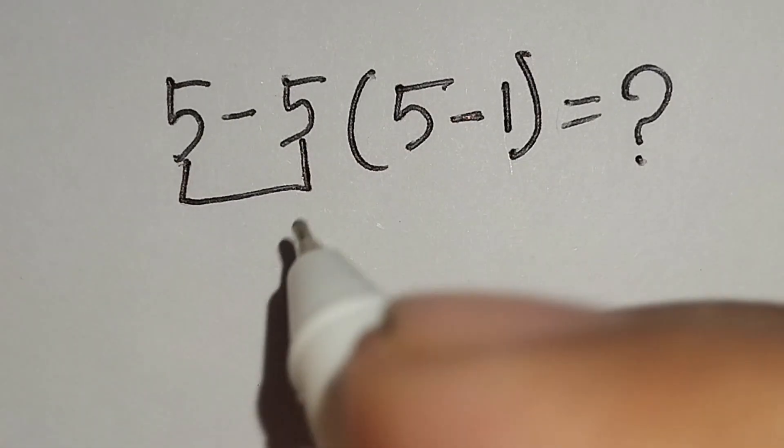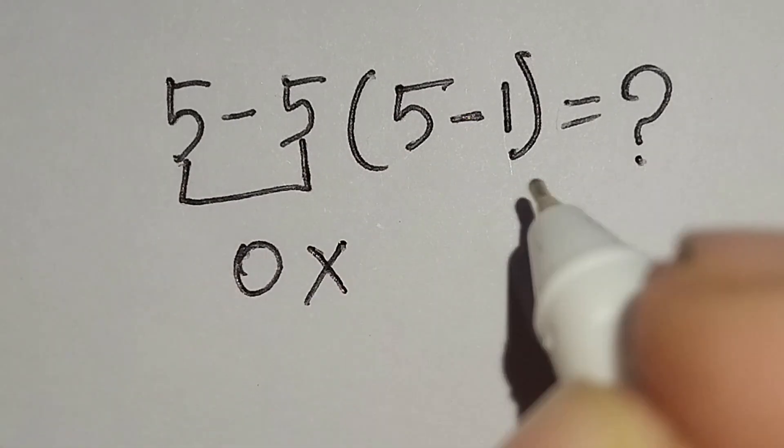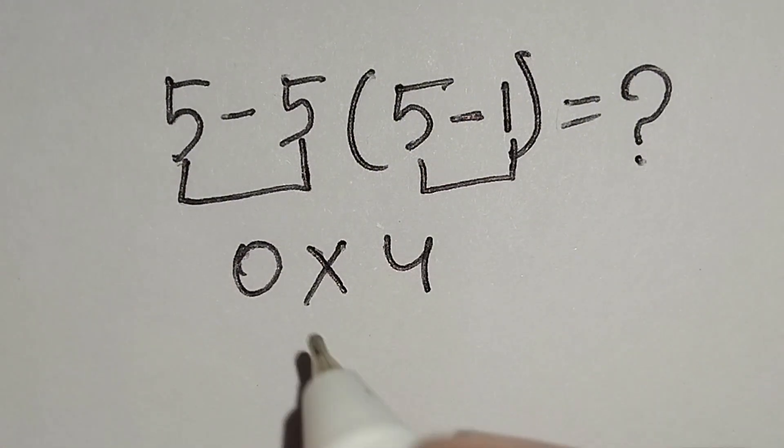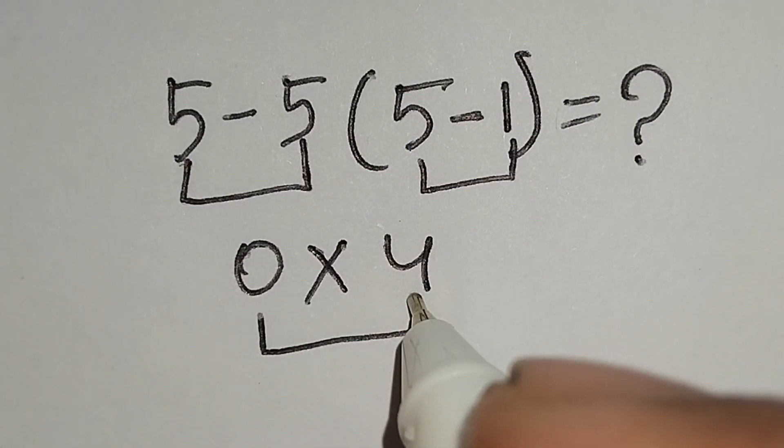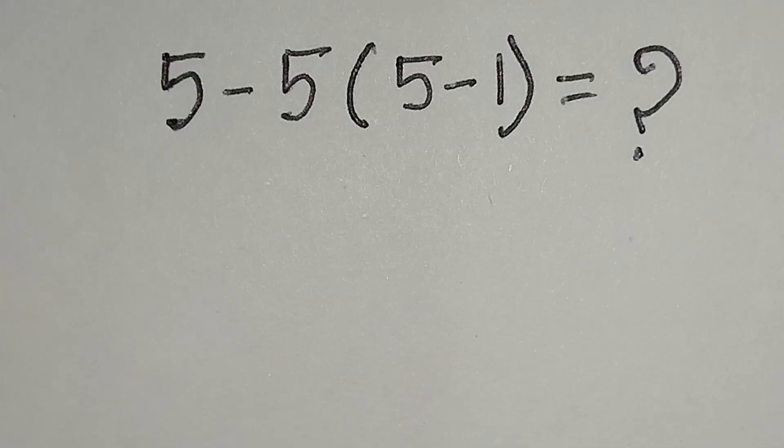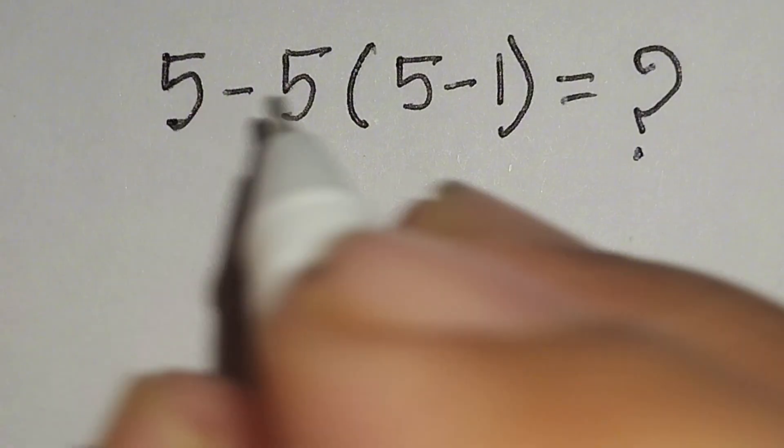Here 5 minus 5 gives us 0, multiply 5 minus 1 gives us 4. 0 multiply 4 gives us 0, but it is not correct.